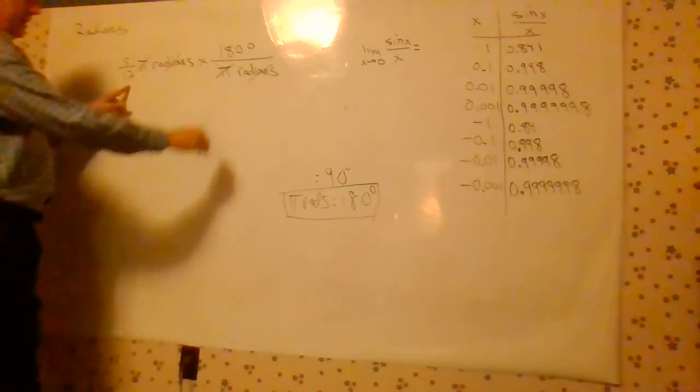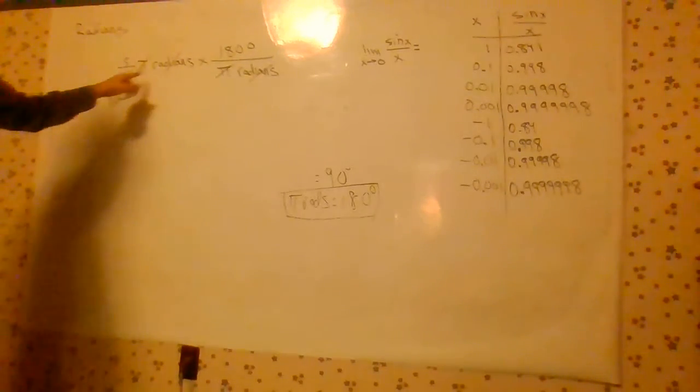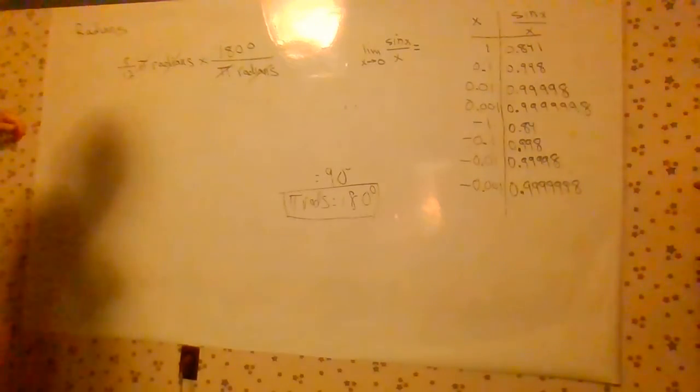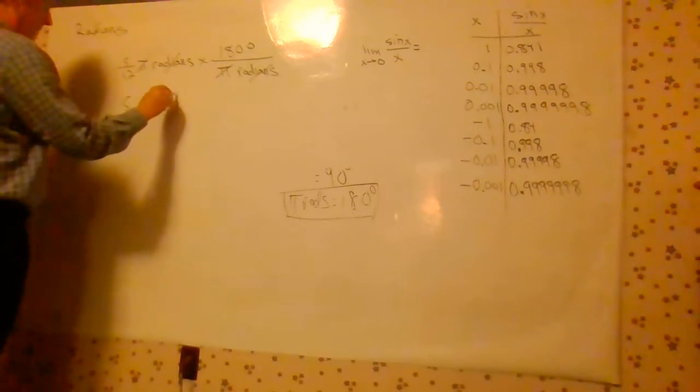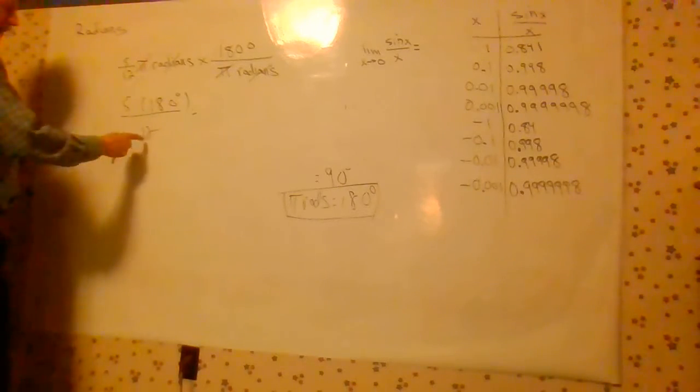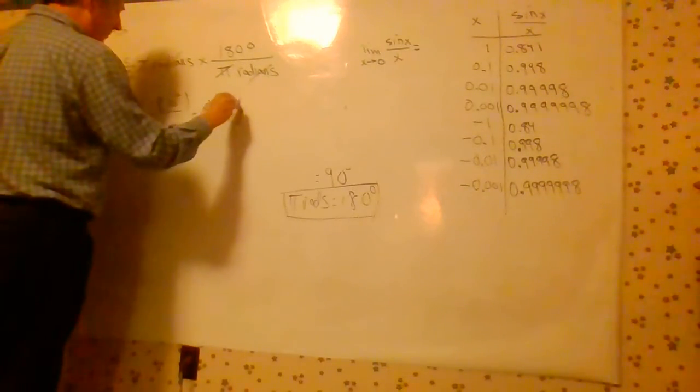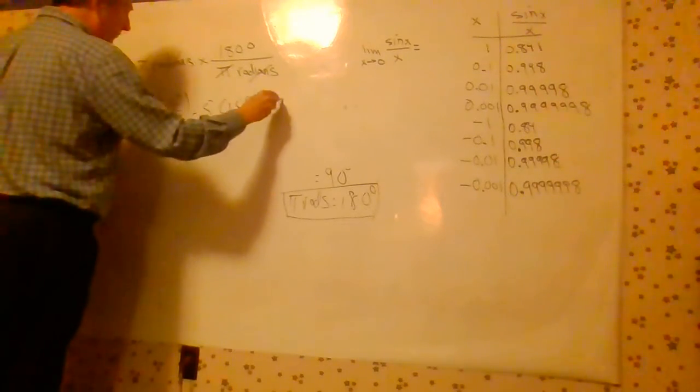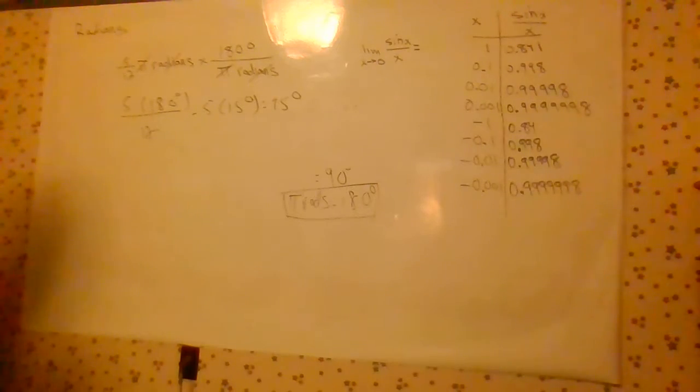And then we have 12 can go into 180. You can do that on a calculator if you want. 12 goes into 180 15 times. So you really have 5 times 180 degrees over 12, and 12 goes into that 15 times. So you have 5 times 15 degrees, 75 degrees. 5 twelfths pi is equal to 75 degrees.